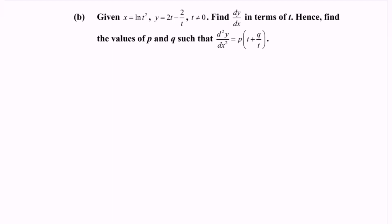Given x equals ln(t squared), we can use the properties of logarithms to rewrite this as x equals 2 ln t. We also have y equals 2t minus 2t to the power negative 1, where t cannot equal 0. Find dy/dx in terms of t. Then find the values of p and q such that the second derivative equals p(t plus qt).